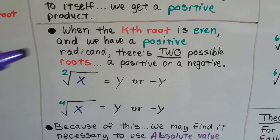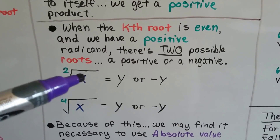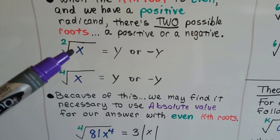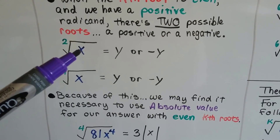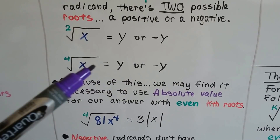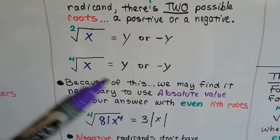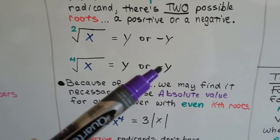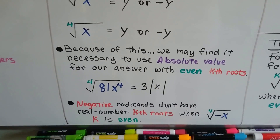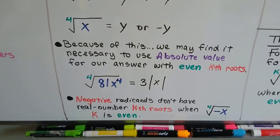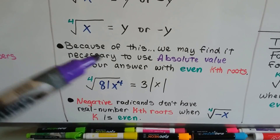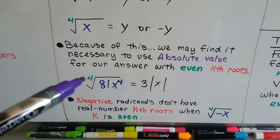When the kth root is even and we have a positive radicand, there are 2 possible roots: a positive or a negative. This could be y times y equals x, or negative y times negative y equals x. With 4 of them: y times y times y times y equals x, or negative y times negative y times negative y times negative y equals x. Because of this, we may find it necessary to use absolute value for our answers with even kth roots — not odd ones, only even ones.